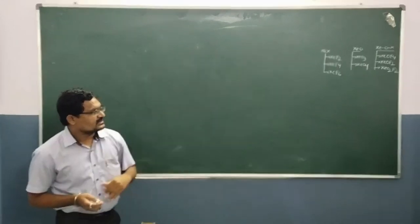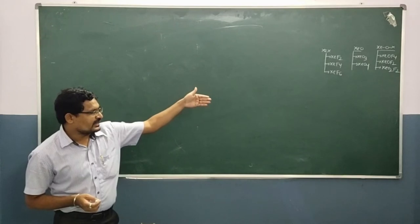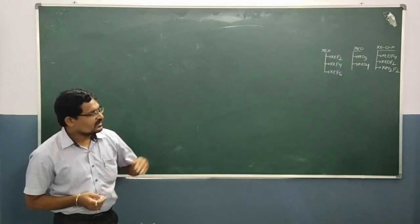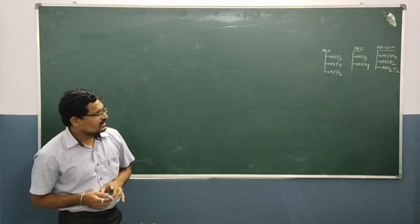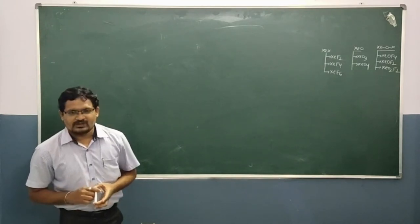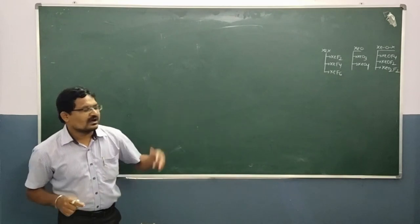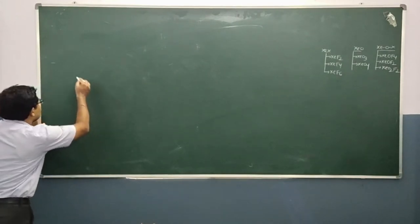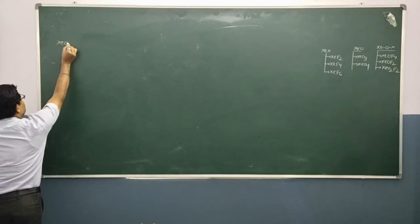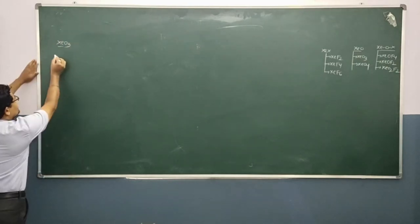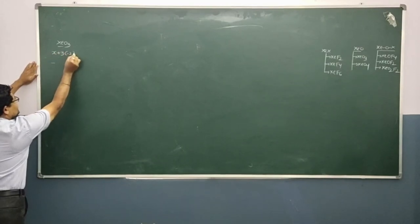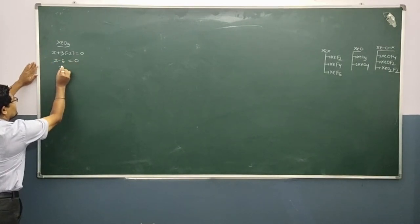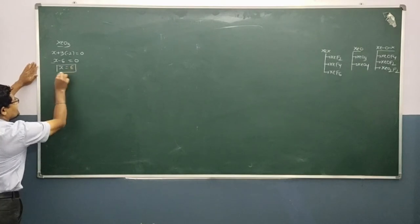Today we discuss all noble gas elements. For XeO3, first we find the oxidation state. X plus 3 into minus 2 equals zero. X minus 6 equals zero. X equals 6, so the oxidation state of xenon in XeO3 is plus 6.